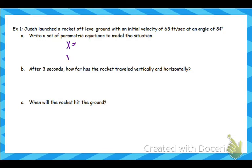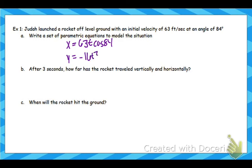So remember we have an x equals and a y equals equation. This one's in feet per second, so 63t cosine 84 is our x, and negative 16t squared plus 63t sine 84 for my y.